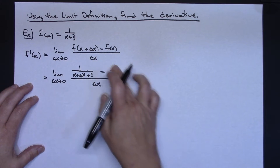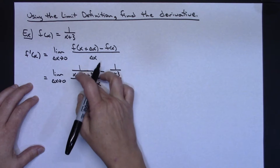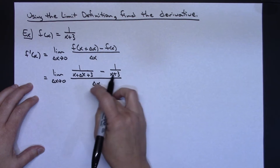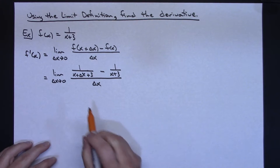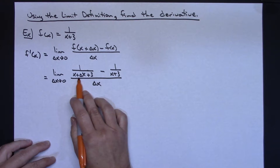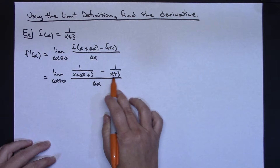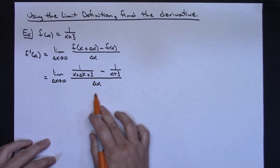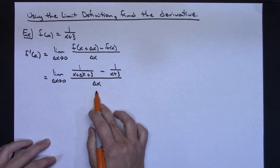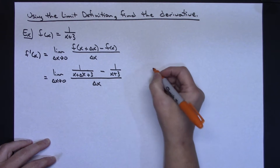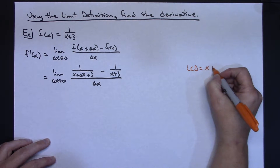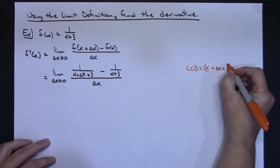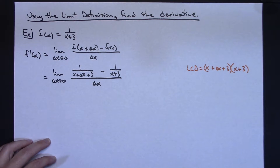At this point I can see a complex fraction — a fraction minus another fraction in the numerator of another fraction. The algebraic technique for simplifying a complex fraction is to multiply by the least common denominator. Looking at all denominators, I have x plus delta x plus 3, and x plus 3, and delta x over 1. So the least common denominator is x plus delta x plus 3, times x plus 3.